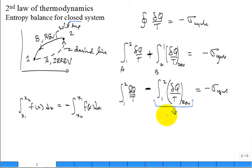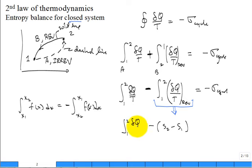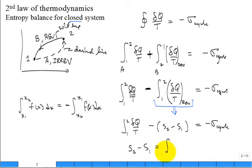We defined entropy last time — in 1865, Clausius said that along a reversible path, the integral of δQ/T from one to two is S_final minus S_initial. That's the definition of entropy change. So the integral δQ/T from one to two along a reversible path is S2 minus S1. Doing a little algebra: S2 minus S1 equals the integral from one to two of δQ over T, plus sigma.